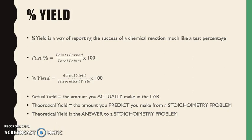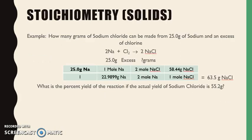Here's an example so you can see this in action. Going back to our sodium and chlorine example — we've already finished the stoichiometry problem, and our theoretical yield is 63.5 grams. That's in a perfect world, nothing goes wrong, on paper. Now here's the add-on: what is the percent yield if the actual yield of sodium chloride is 55.2 grams? The actual yield is the amount you actually made in the lab.